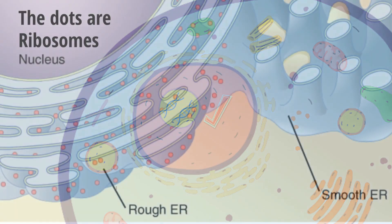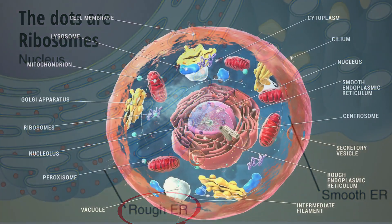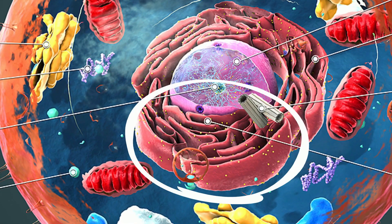The rough endoplasmic reticulum is involved in protein production and transporting proteins. It is the location of many ribosomes, which makes it look rough. It takes these proteins created by the ribosomes, sometimes modifies them, and then packages them into a vesicle and sends it out to the Golgi apparatus.